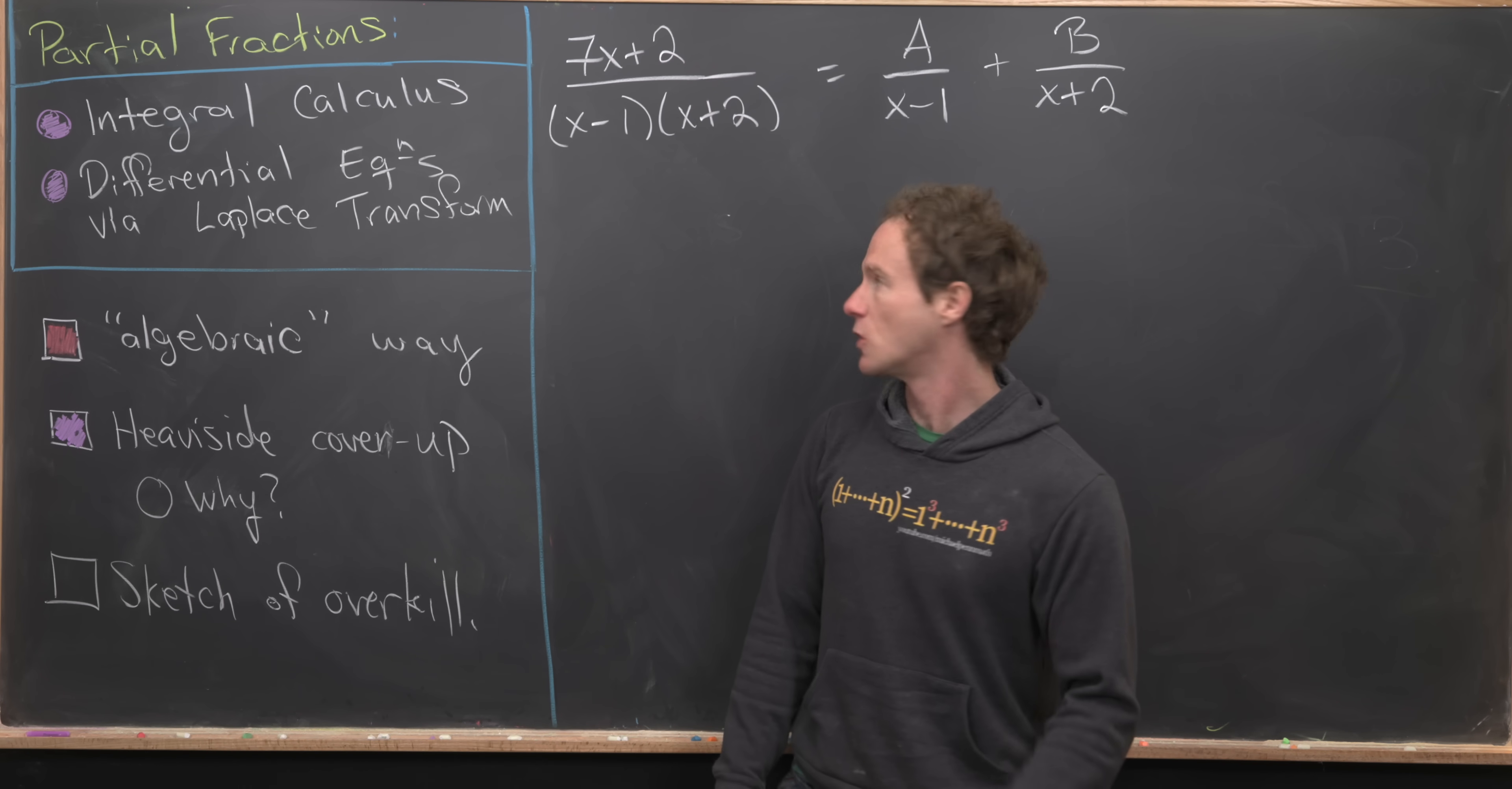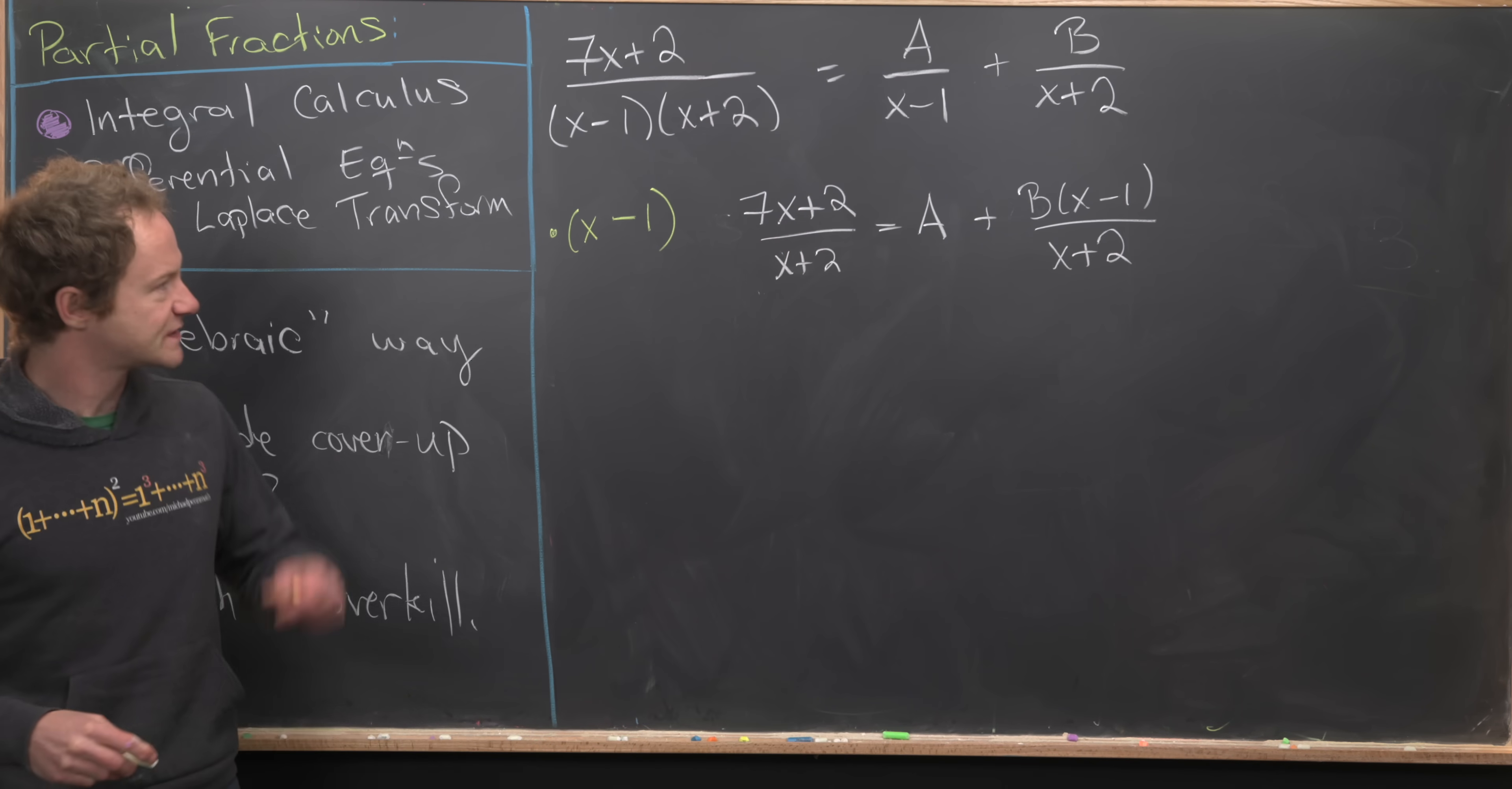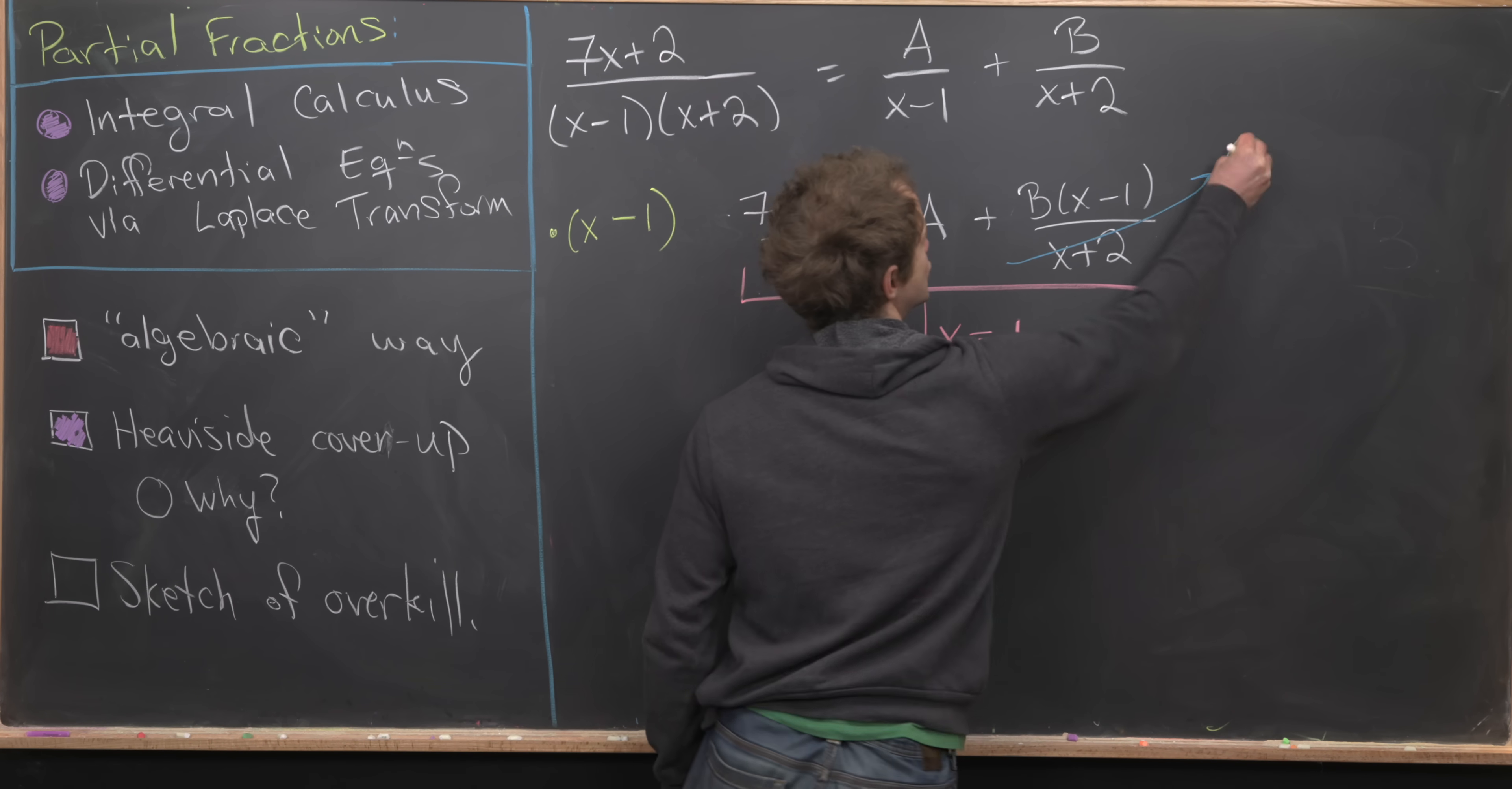Covering up (x minus 1) on the left-hand side can be thought of as being algebraically equivalent to multiplying both sides of this equation by (x minus 1). That gives me (7x plus 2) over (x plus 2) equals A plus B times (x minus 1) over (x plus 2). We've taken a discontinuity from this term and this term occurring at x equals 1 and moved it to a zero of this term occurring at x equals 1. Now we can take this entire equation and set x equal to 1. This left-hand side will equal 3, and the right-hand side will just equal A because this term will trend off towards 0.